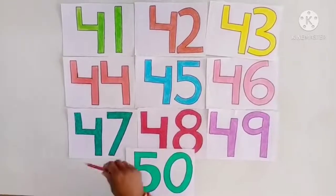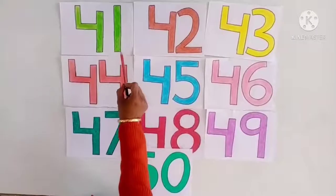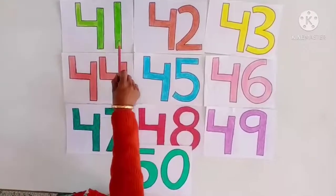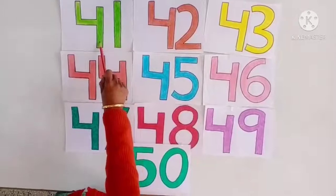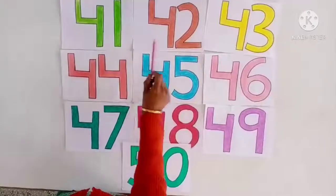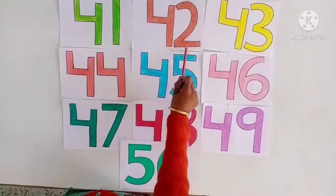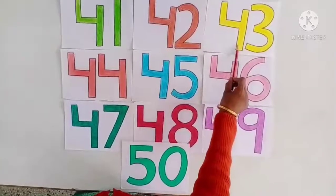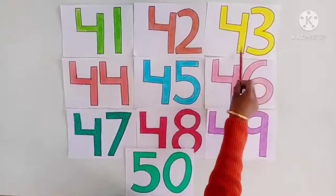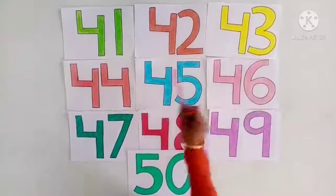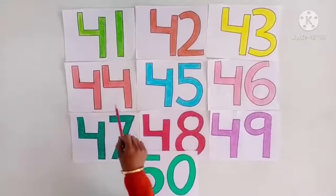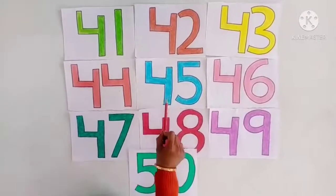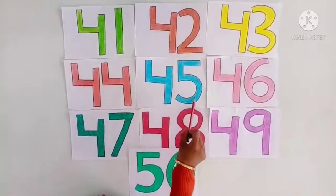Children, you have to repeat after me. Four tens and one ones — forty-one. Four tens and two ones — forty-two. Four tens and three ones — forty-three. Four tens and four ones — forty-four.